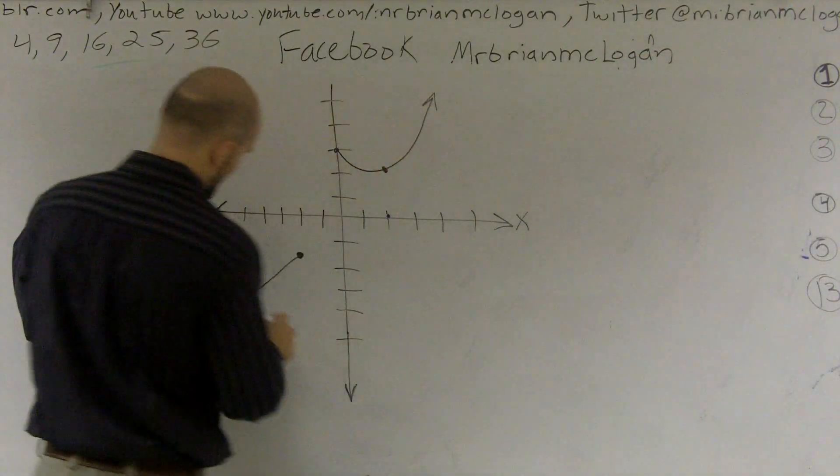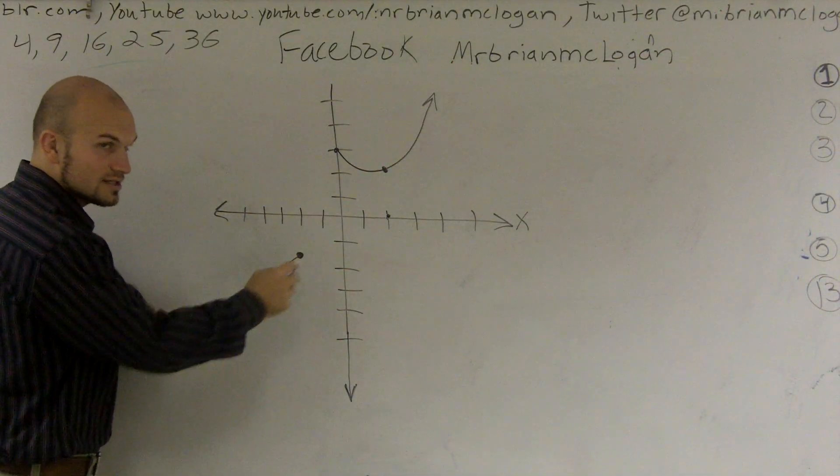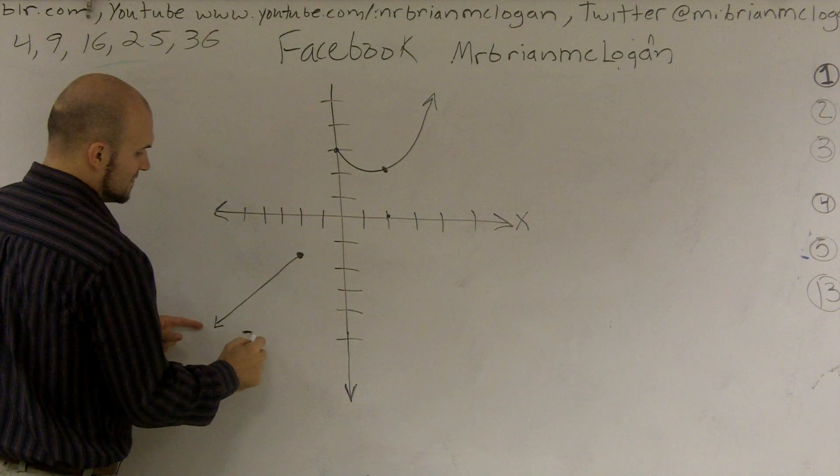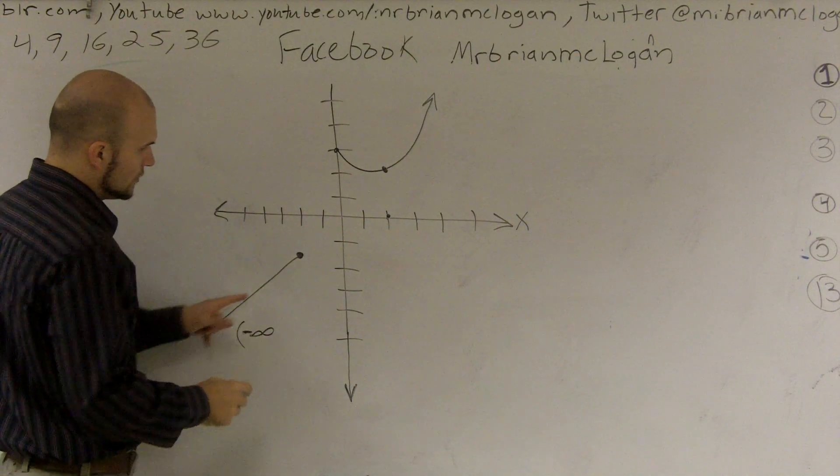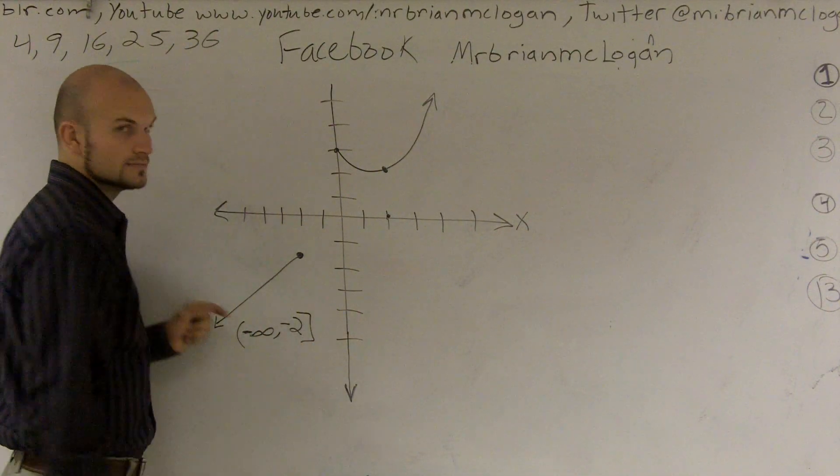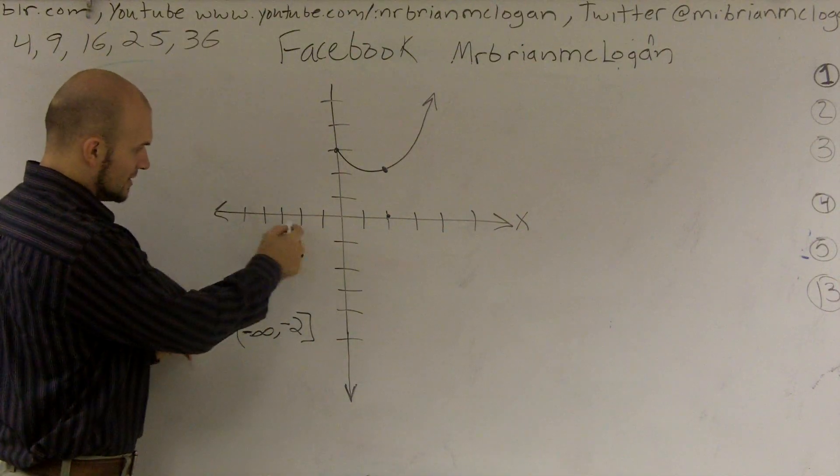And you could say, well, this arrow continues to infinity, so I'd have negative infinity all the way up to the point of negative 2, because every one of these has a point.